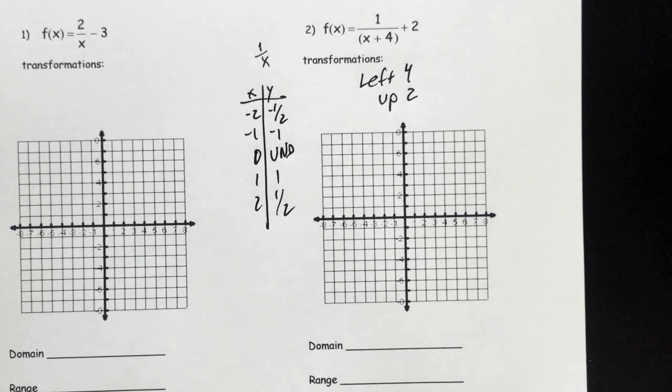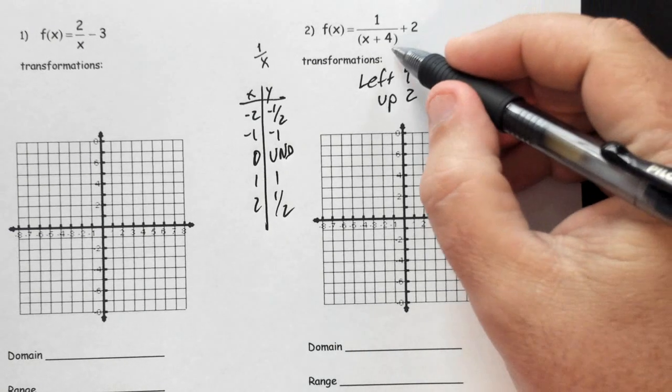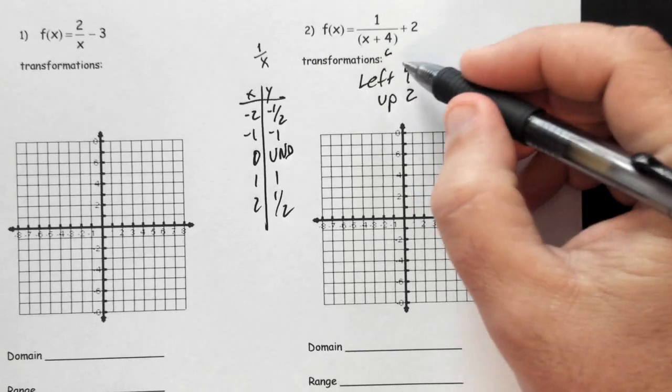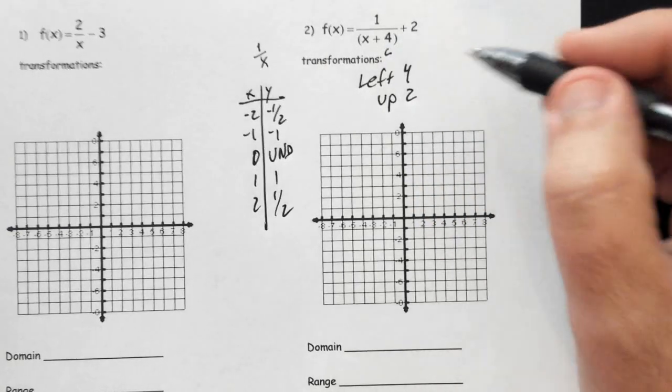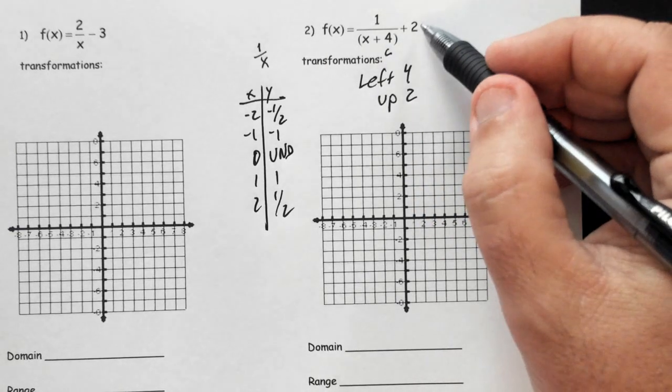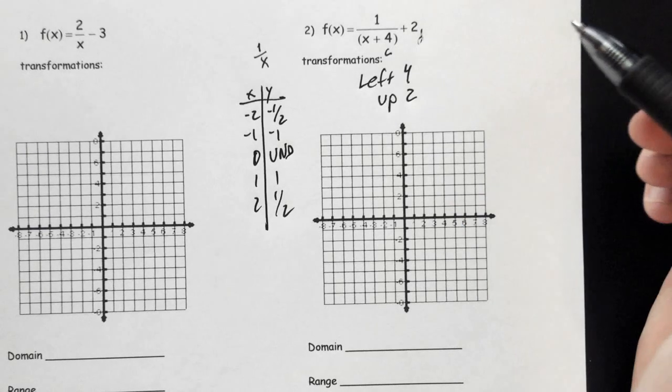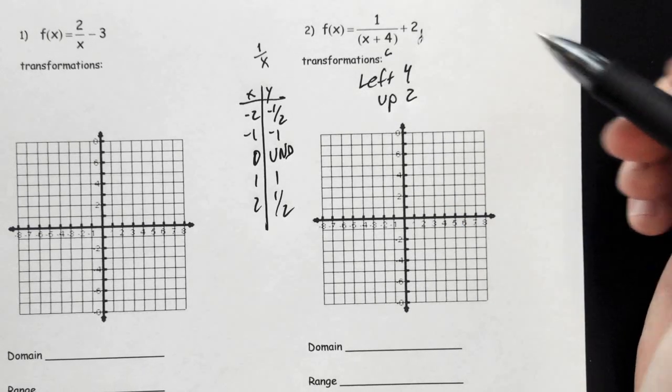So in number two, if you look at the problem, it's 1 over (x+4) and then plus 2. What I've already done is we've already looked at our transformations. We should know our transformations. This is my C value and that C value is negative four, which means I'm going to go left four. The D value is here at two, so that means it's going to go up two.